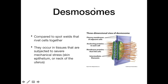Desmosomes are found in many tissues and have been compared to spot welds or screws — they rivet cells together. They are found in cells subjected to severe mechanical stress, such as the skin epithelium which can be pulled without tearing, the cervix of the uterus which must expand greatly during childbirth, and the heart muscle cells that must stay together as the heart contracts.